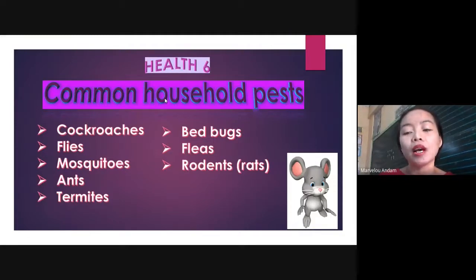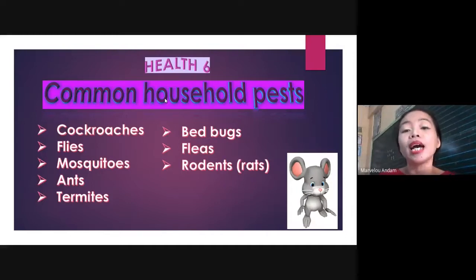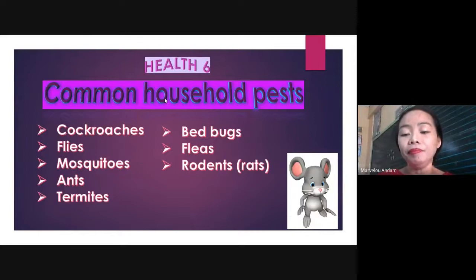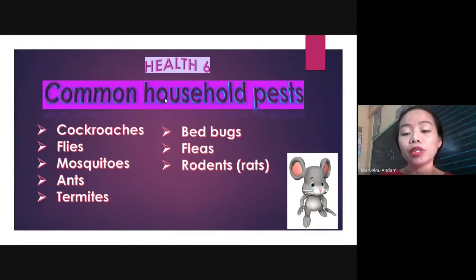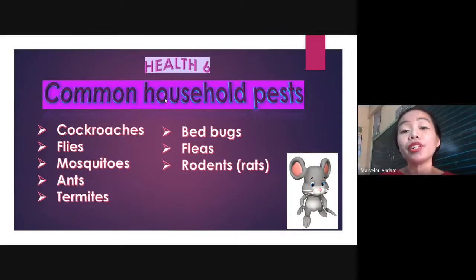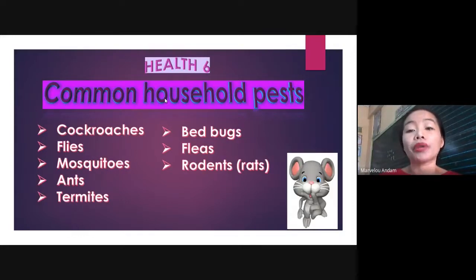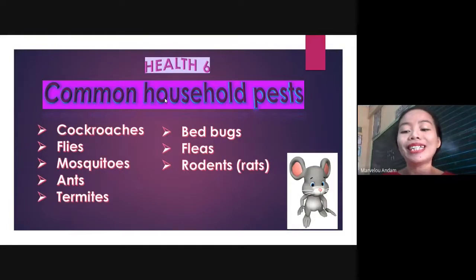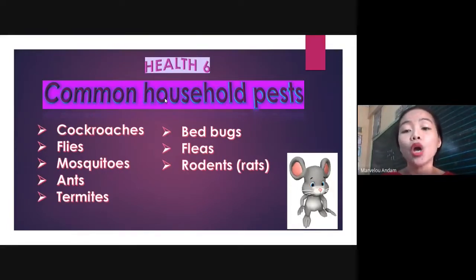Rodents, by the way, are four-legged animals with two sharp front teeth, like rats or mice, squirrels, beavers, guinea pigs, and hamsters. The pests mentioned may cause diseases and health hazards to people, problems in plants and in other animals or in the environment in general. These creatures are the primary carriers of diseases and illnesses that can be passed to humans through bites and droppings.